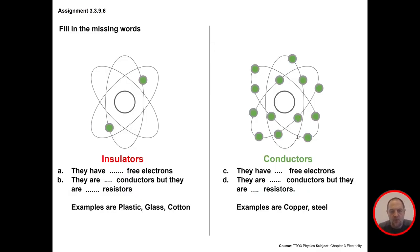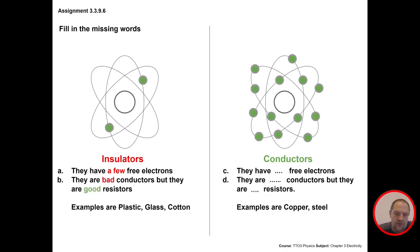Please stop the movie and fill in the missing words. Insulators have very few free electrons — they are bad conductors but good resistors. Examples are plastic, glass, and cotton. Conductors have a lot of free electrons — they are good conductors but bad resistors.